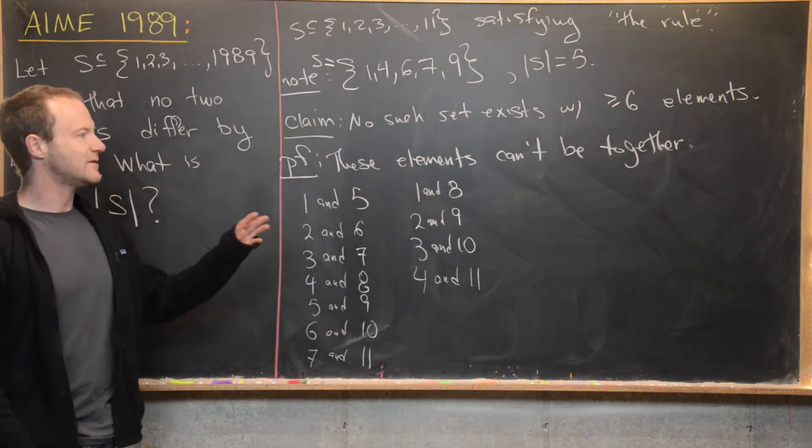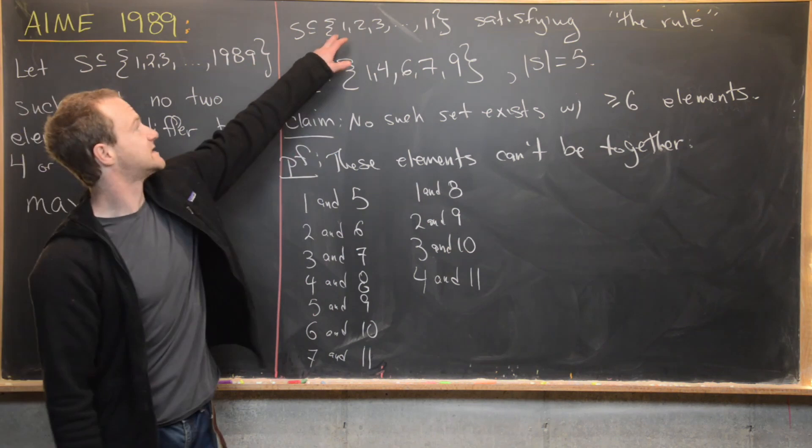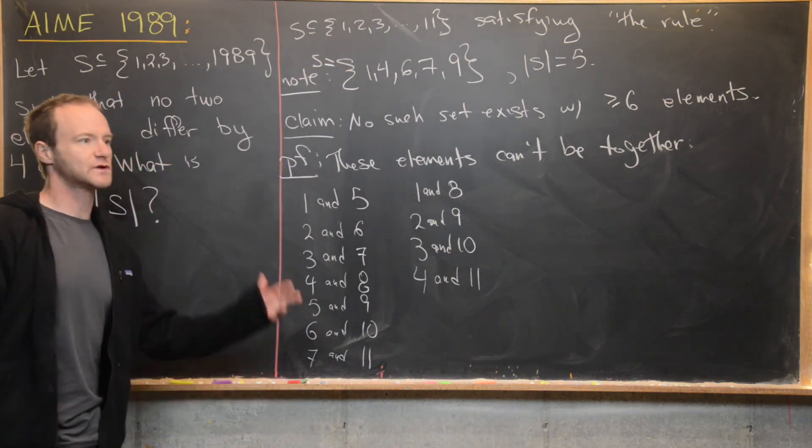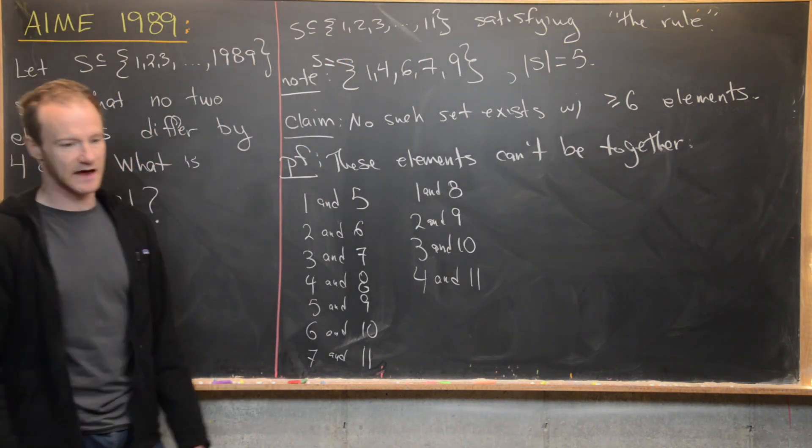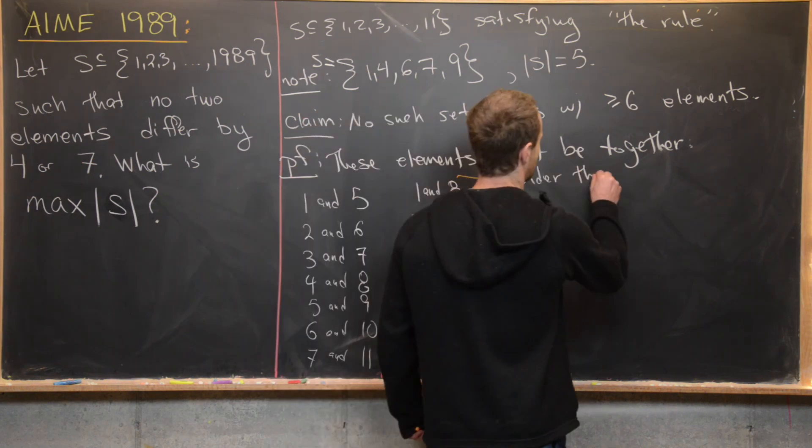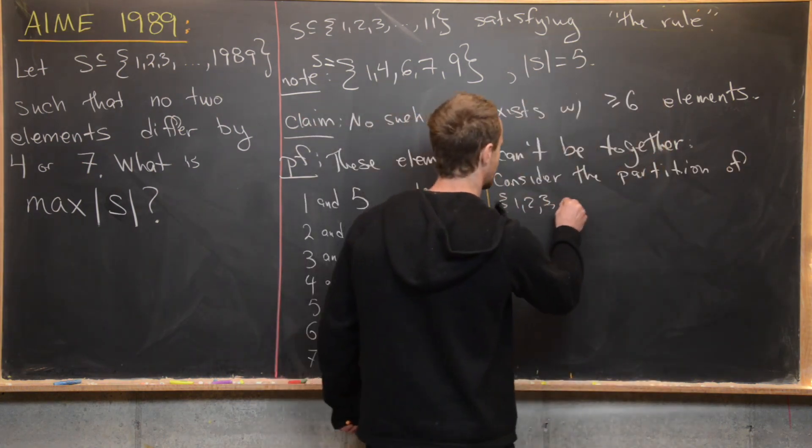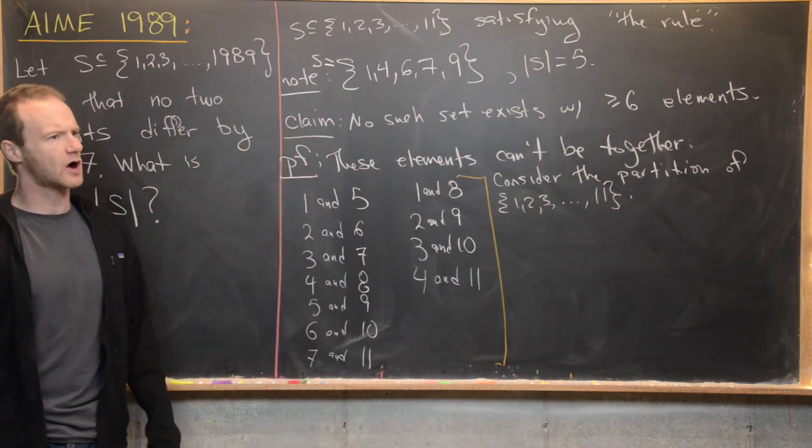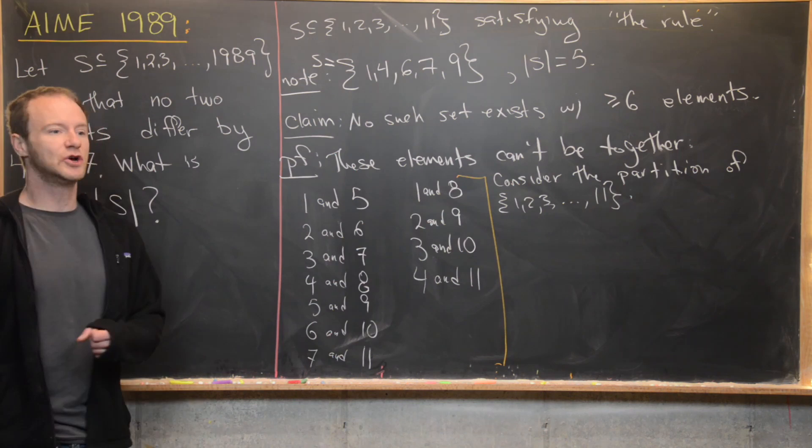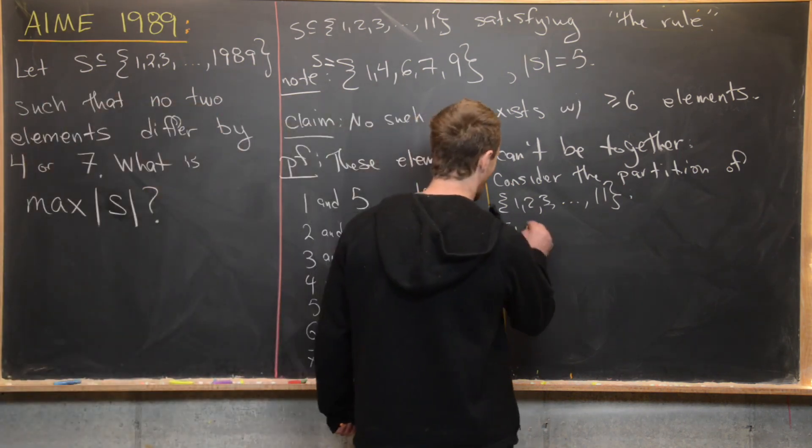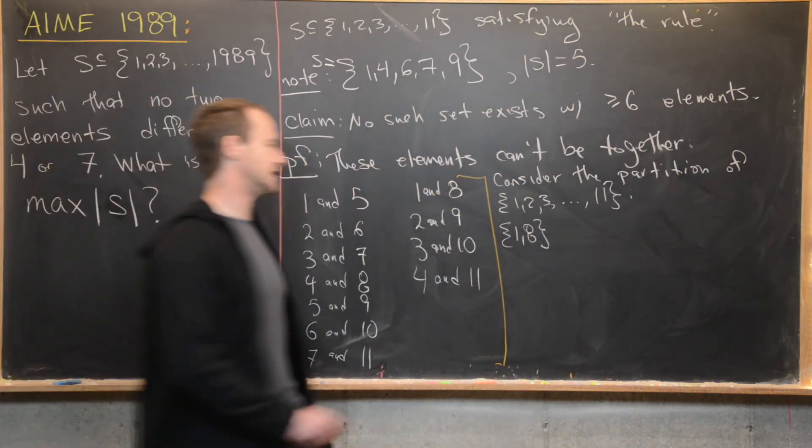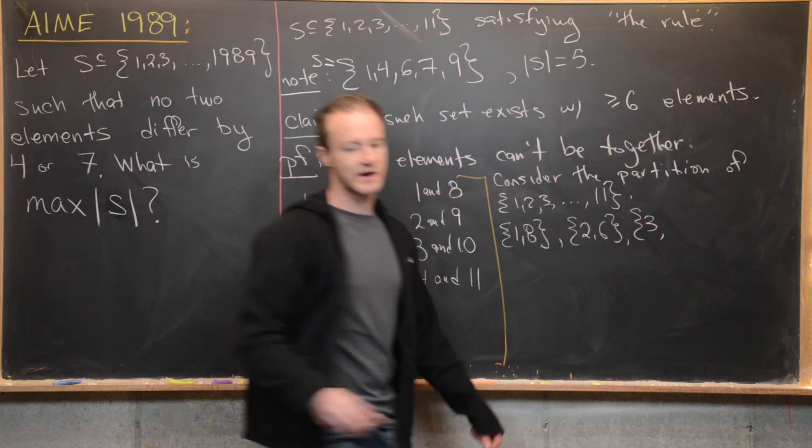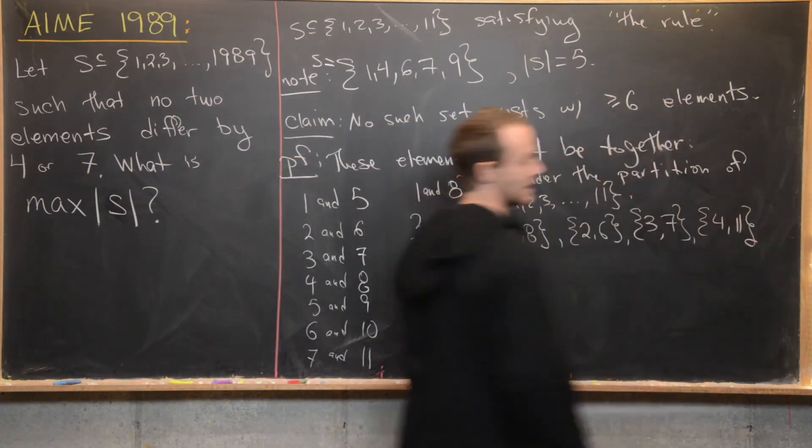So from here there's a lot of things that you can do, but I think the best thing to do is to form a partition of this set 1, 2, 3, up to 11, made up of pairs of numbers or a single number which cannot be paired together. So let's consider the partition. So it's a set of subsets that are disjoint whose union is the entire parent set. So we'll take 1 and 8, and there are ways to do this as well. So 1 and 8 are not allowed to be together, 2 and 6 are not allowed to be together, 3 and 7 are not allowed to be together, 4 and 11 are not allowed to be together, and 5 and 9.